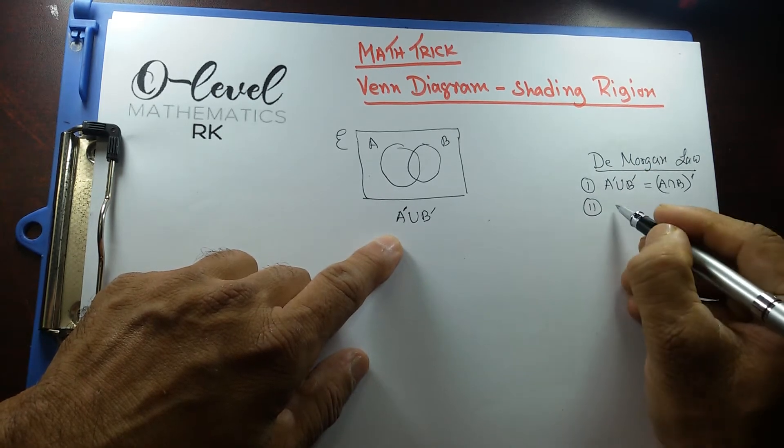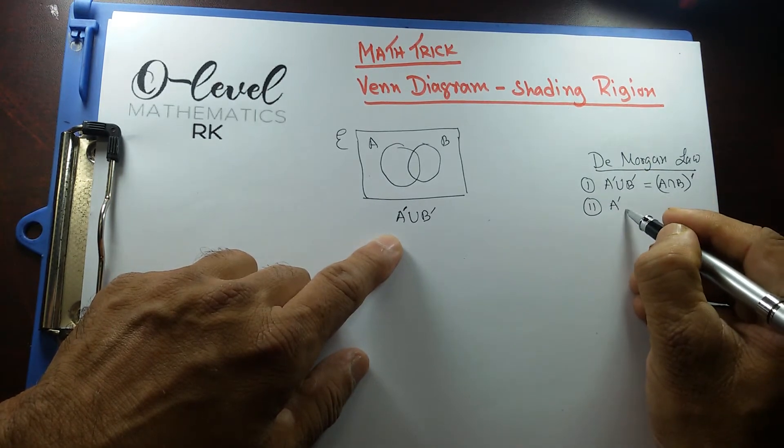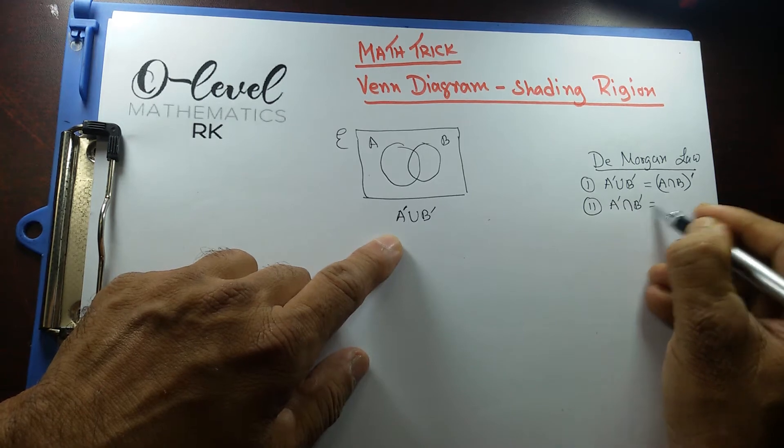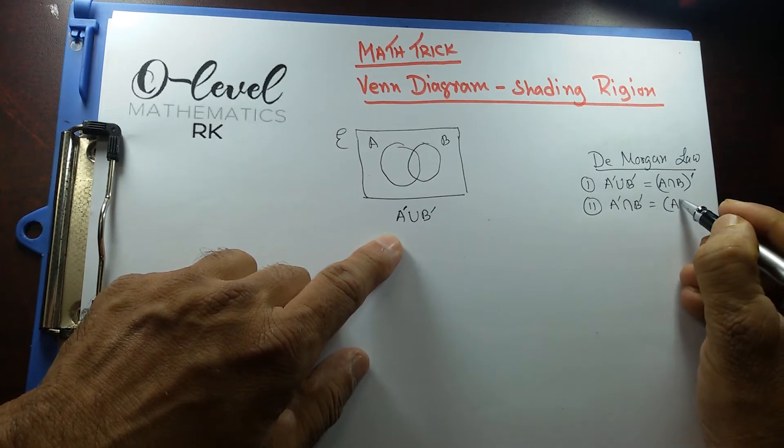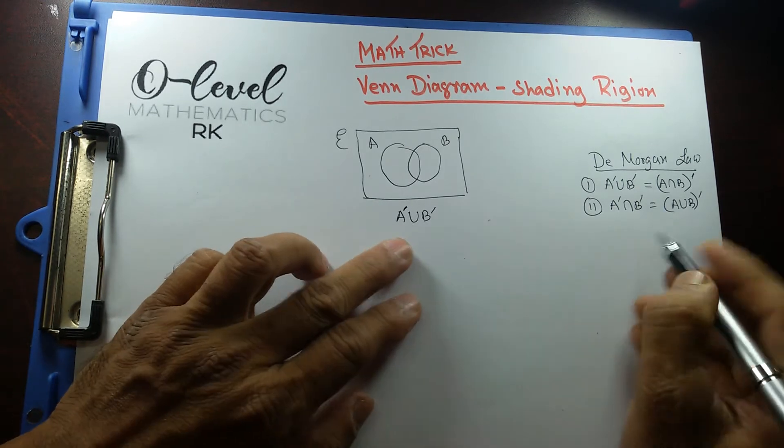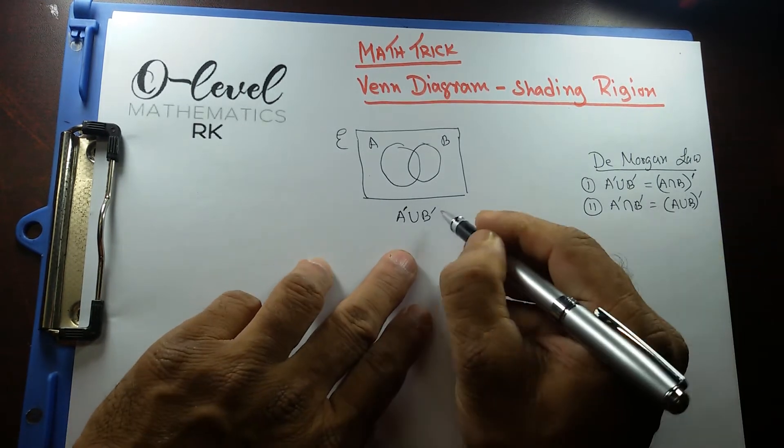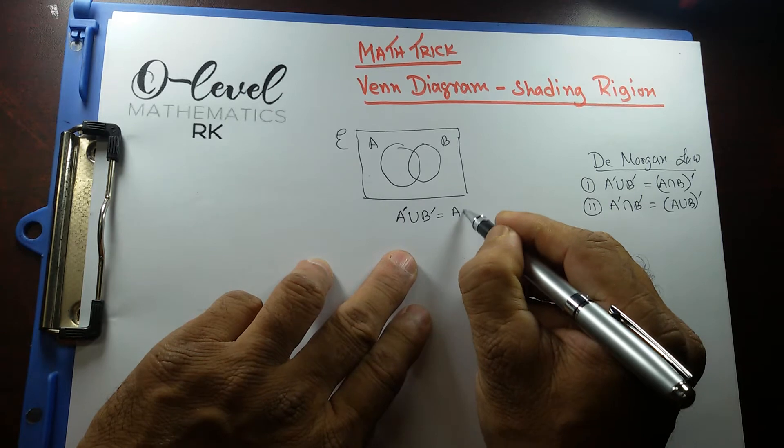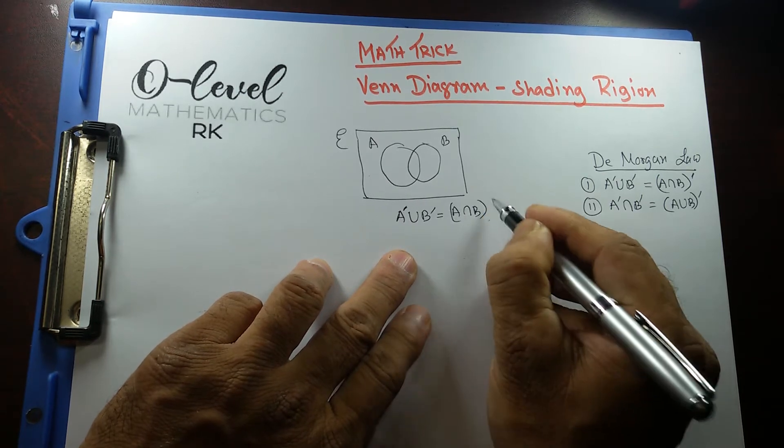And another law we're going to use, A prime intersecting B prime, that's equals to A union B whole prime. So, this one I can use, this first one, A intersecting B whole prime.